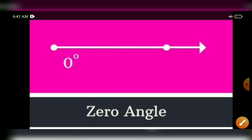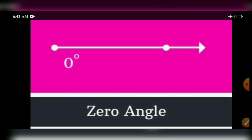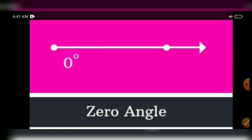Zero angle: an angle whose measure is 0 degrees. That is not a straight line — that one side, that ray, is called 0 degrees.